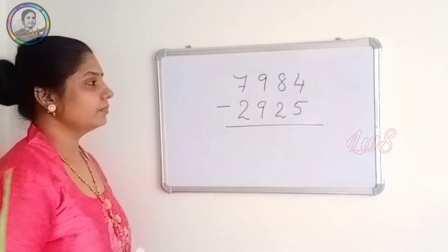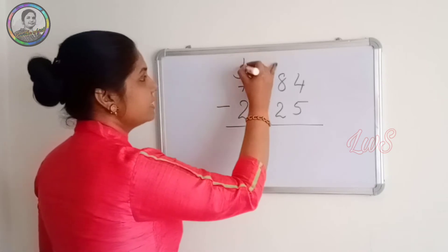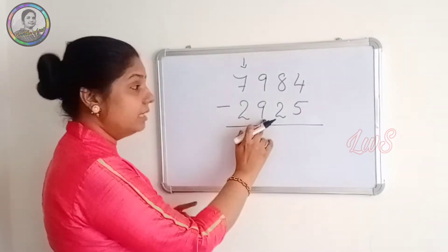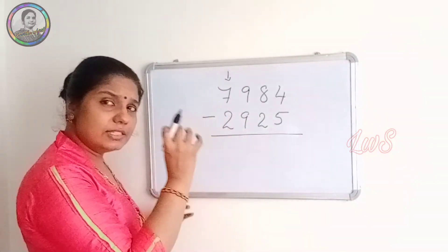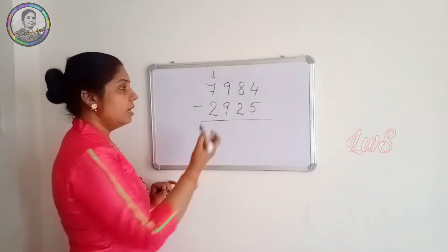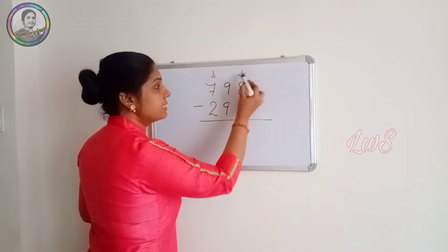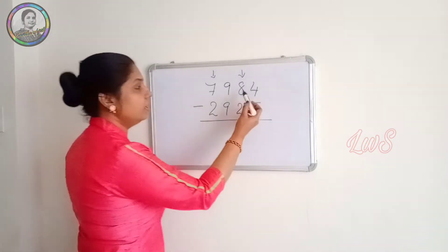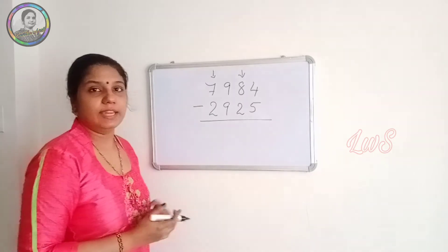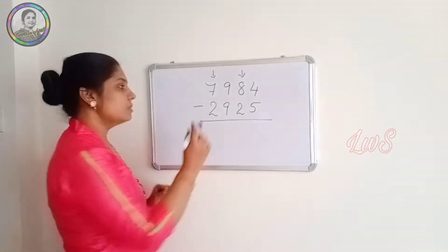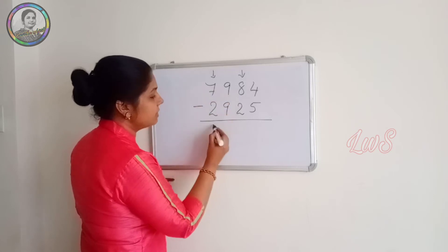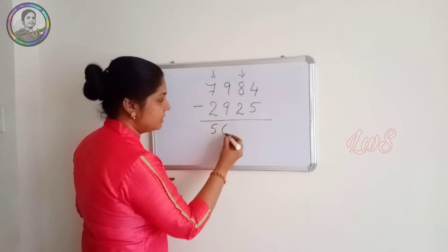Now, next question. Starting from the left hand side. 7 minus 2, 5. Now look for the neighbor. 9 minus 9. He is just sufficient to subtract, no problem. But again, look for the next neighbor. Look here. 8 minus 2. He is more than sufficient. So we don't have to give anything to him. So what we do is we can write the 7 minus 2, 5. 9 minus 9, 0.